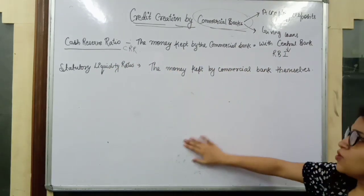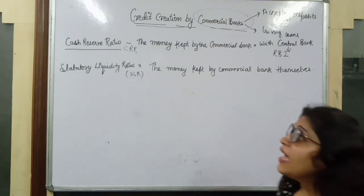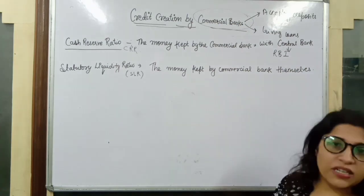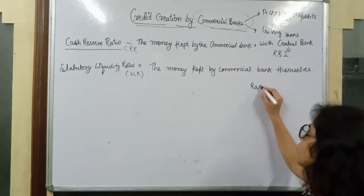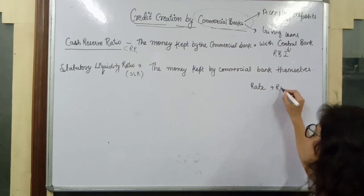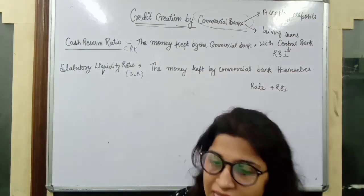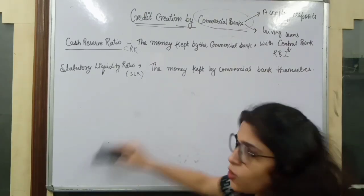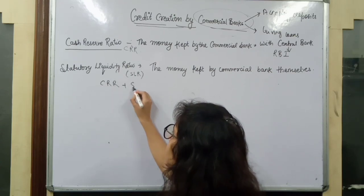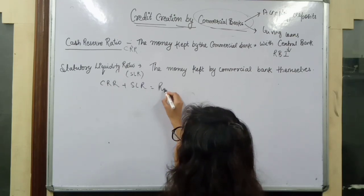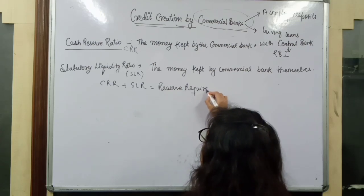We have another ratio, that is the Statutory Liquidity Ratio, which is SLR. SLR is the money that commercial banks have to maintain, and the rate is set by RBI. Together, CRR and SLR make up the Reserve Requirement, that is RR.